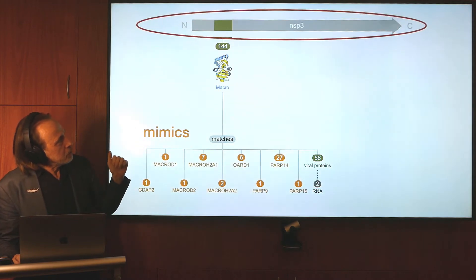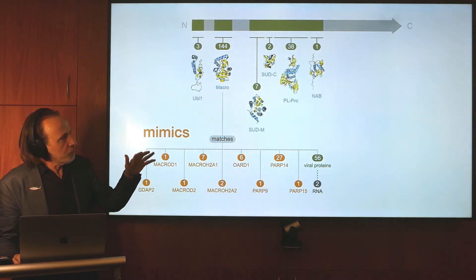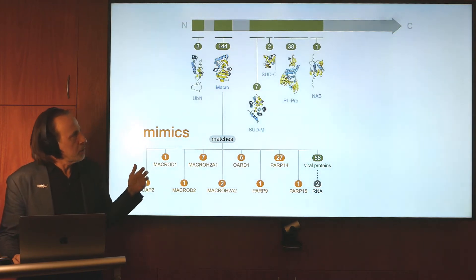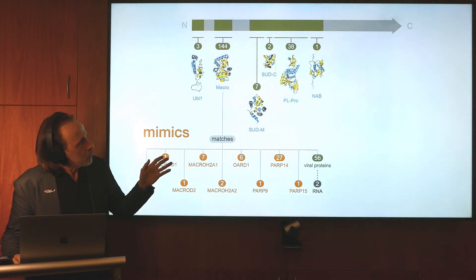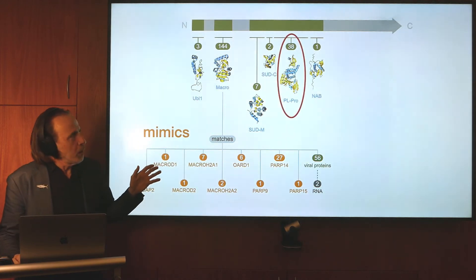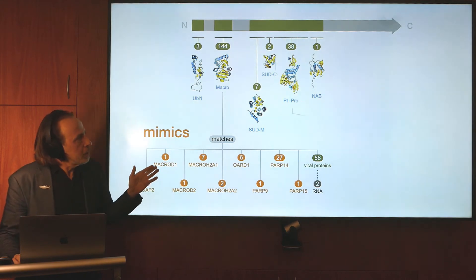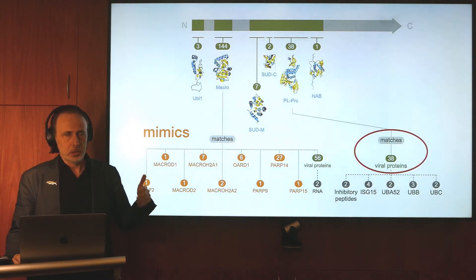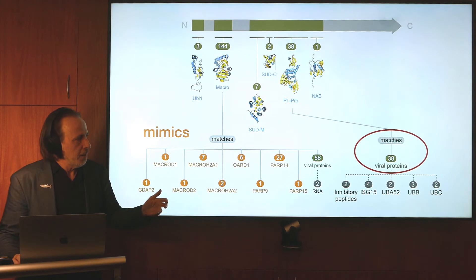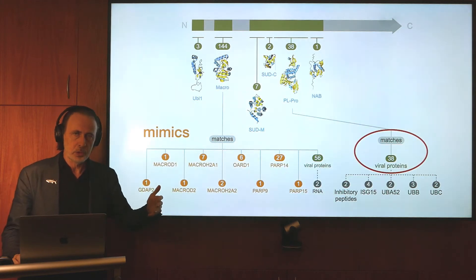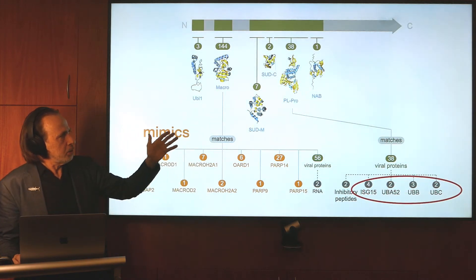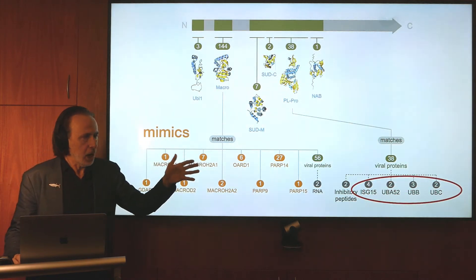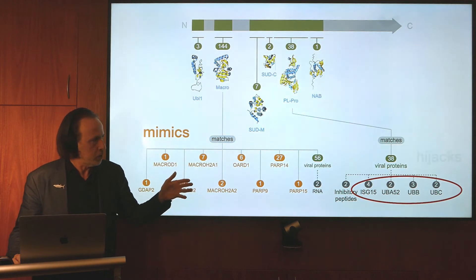Going back to the NSP3 sequence, we found an additional five regions that also had matching structures. One of the more interesting ones was the PeelPro domain, which had 38 matching structures — all 38 matching to viral proteins. But in some cases, those structures also had viral proteins bound to human proteins. So one way to read this part of the graph is that the PeelPro domain may potentially hijack these human proteins.